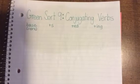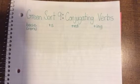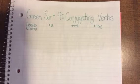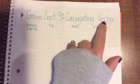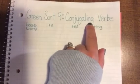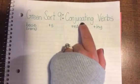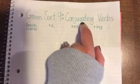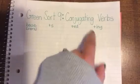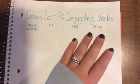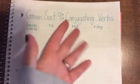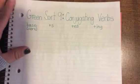Hi third graders and welcome back to the word study video for this week. We are looking at green sort number nine, in which we're going to be taking a look at some verbs and we're going to be doing something called conjugating them. Conjugating verbs means changing them from present to past and to future when we get there.